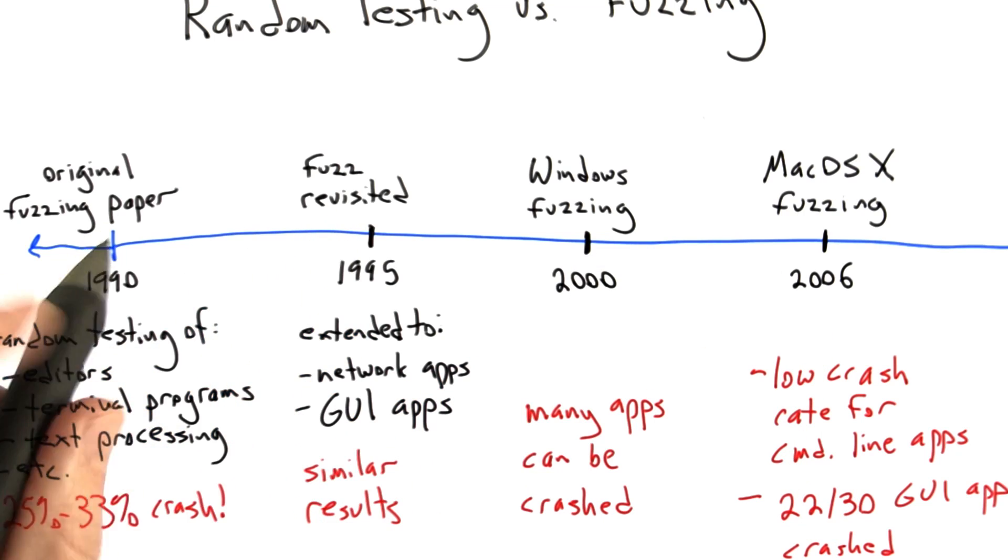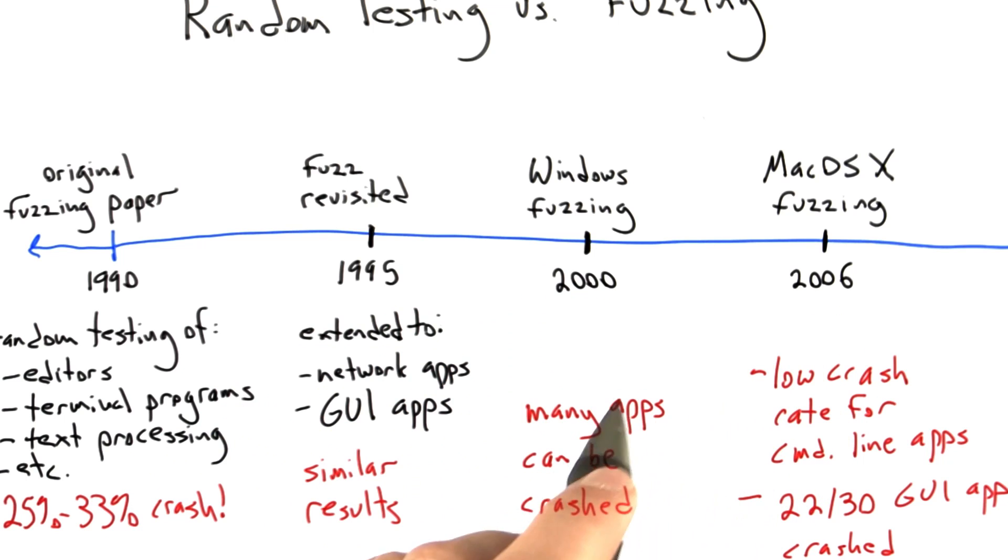But the input generation methodology that they used, that is to say, basically generating random garbage and not really worrying about the input validity problem, remained the same across all of these studies.